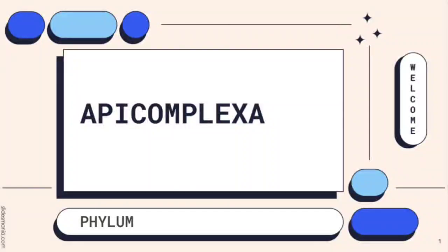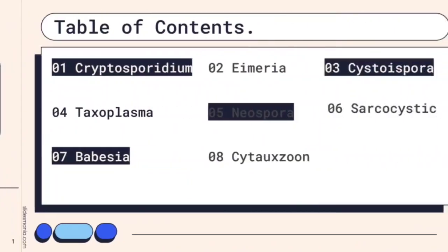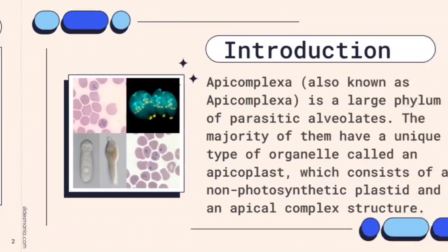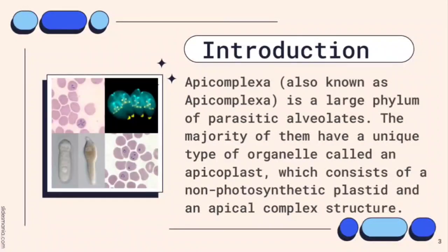Good day everyone. I am going to discuss about Apicomplexa. For the introduction of Apicomplexa: Apicomplexa is a large phylum of parasitic alveolates. The majority of them have a unique type of organelle called an apicoplast.